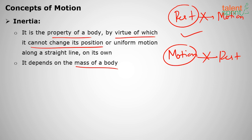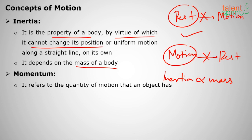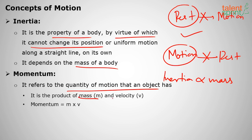Inertia depends on the mass of the body. Higher the mass, higher the inertia; lesser the mass, lesser the inertia. So inertia is always proportional to mass. The next concept is momentum. Momentum is a quantity of motion that an object has — it is nothing but the product of mass and velocity: p = m × v.